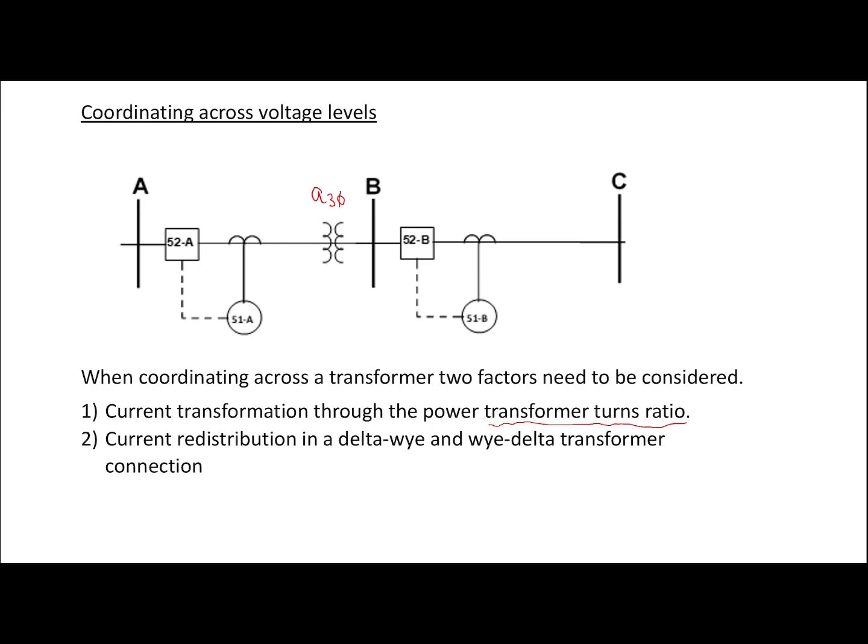The second factor is how the power transformer is connected. When it is connected in a Delta-Y or a Y-Delta configuration, it has an effect on the line-to-line current coming through the transformer. So these are the two factors we're going to be looking at.